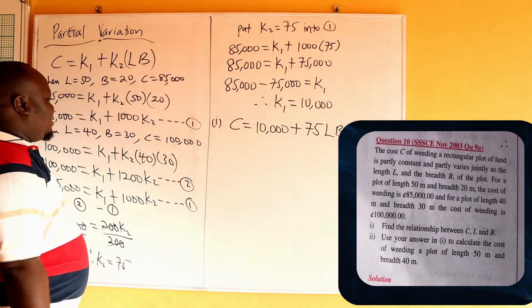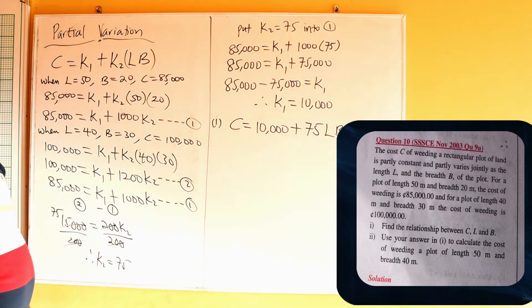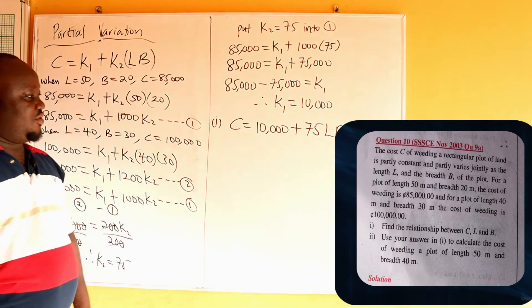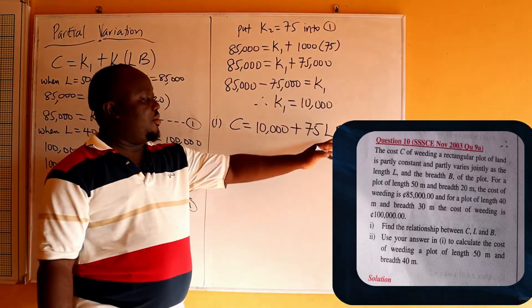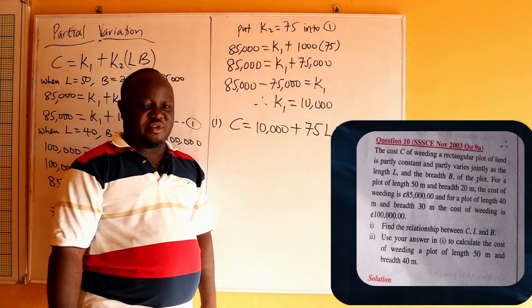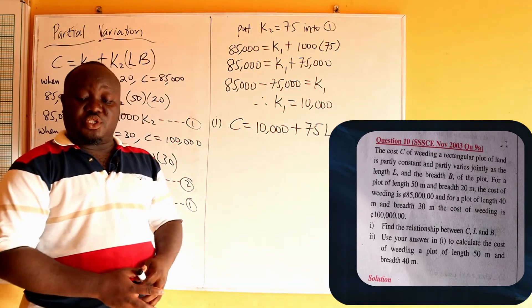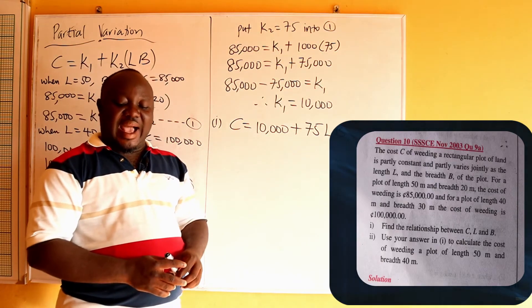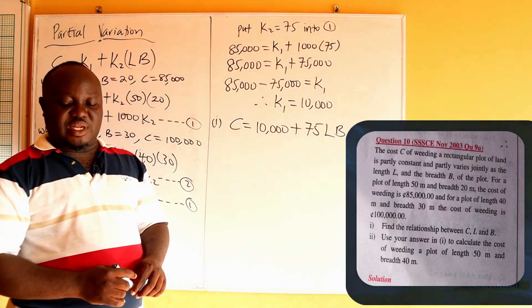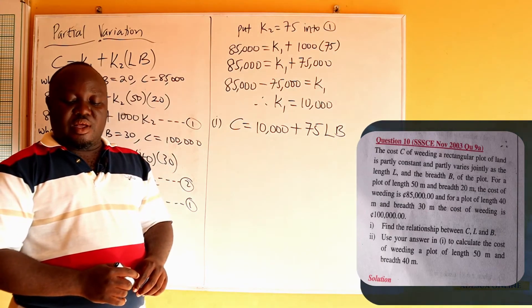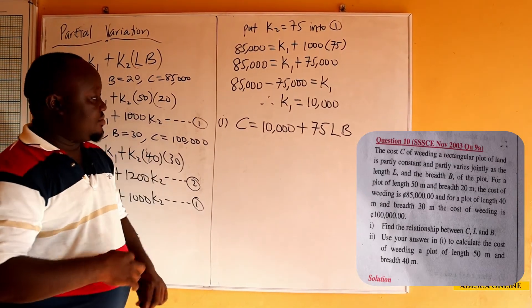Using this equation, we can find C when L and B are given, or find L when C and B are given, or B when C and L are given. The second part asks us to calculate the cost of weeding a plot of length 50 meters and breadth 40 meters.